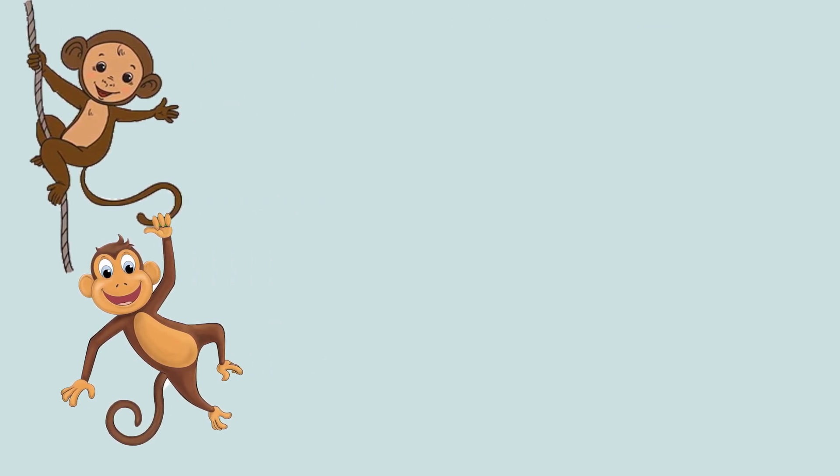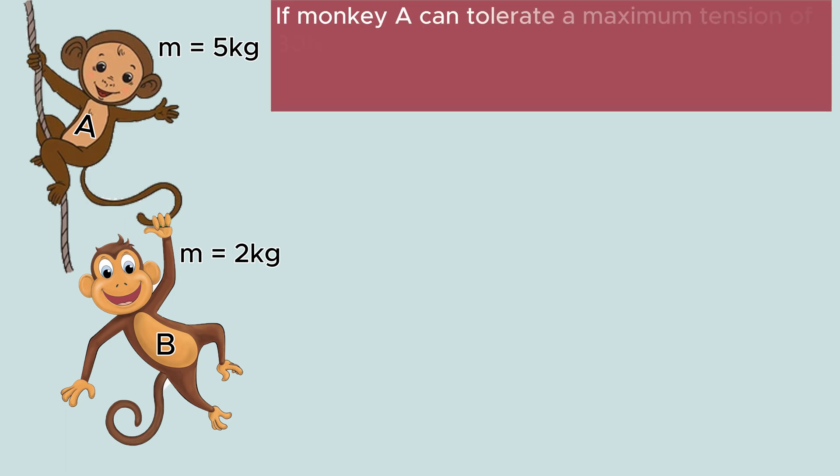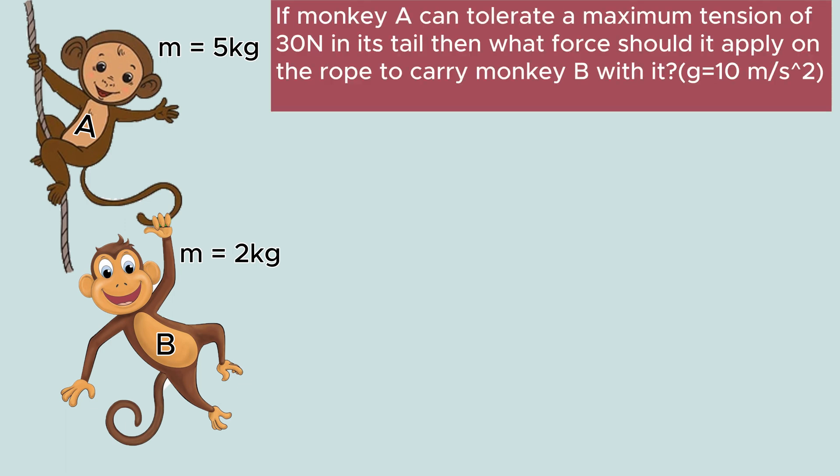In this problem, a monkey A of mass 5 kg is climbing up a rope and a monkey B of mass 2 kg is holding onto the tail of monkey A. The question is, if monkey A can tolerate a tension of 30 N in its tail, then what force should it apply on the rope in order to carry monkey B with it.